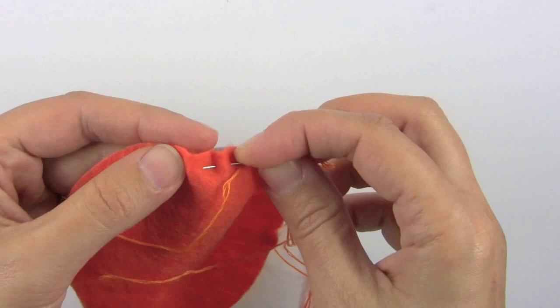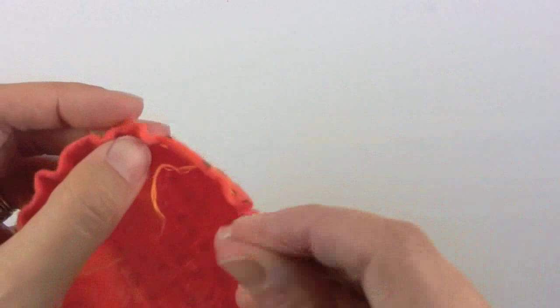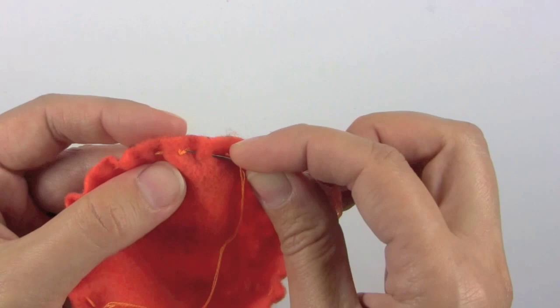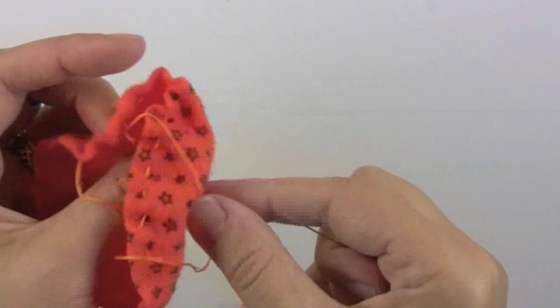You can see that's already starting to form the gather. I'm just going to go ahead around the rest of the circle here. I'm almost to the end back to the beginning. When I do this part I just go right a little bit past where I started so the stitches will overlap.